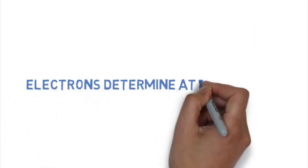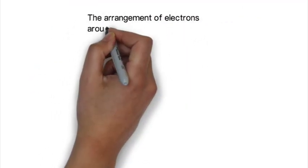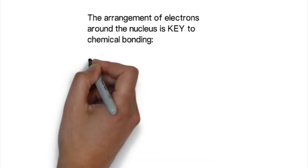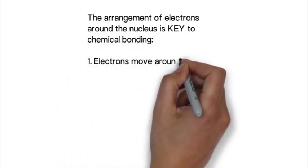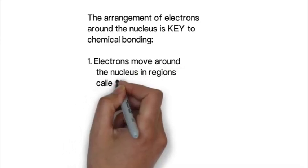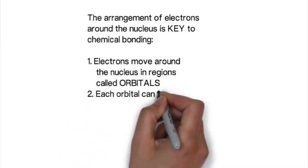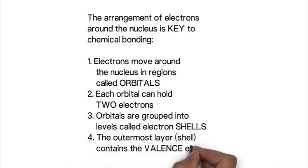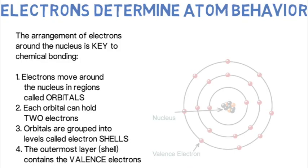The key for these atoms to form more complex molecules is bonding through electrons. The arrangement of electrons around the nucleus is most important. Electrons move in regions called orbitals. Each orbital can hold up to two electrons. Orbitals are grouped in levels called electron shells around the nucleus, and the outermost layer of electrons is called the valence electrons.